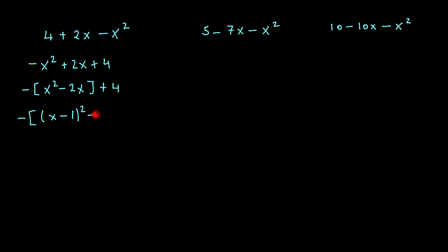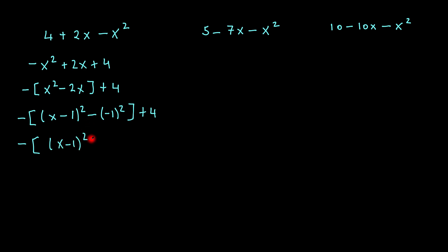Squaring that, subtracting the minus 1 all squared, and of course that would be plus 4 outside the square bracket. So this time I'm just going to tidy up everything. That will give me x minus 1 all squared, that gives me minus 1 plus 4. Now what I do is bring the minus in and multiply everything within the bracket by minus 1.